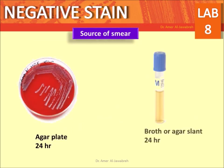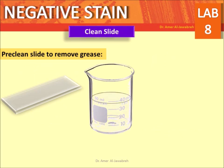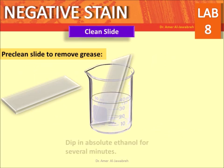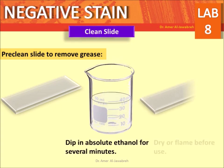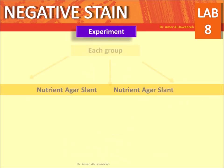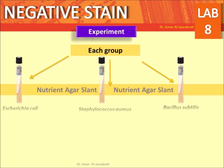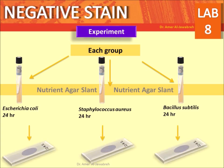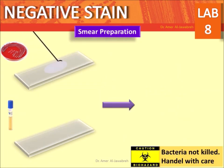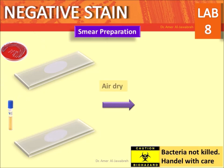Source of smear: agar plate, broth, or agar slant. Clean slide preparation: pre-clean the slide to remove grease, dip in absolute ethanol for several minutes, then dry or flame before use. Provide each group with three nutrient agar slants: the first containing Escherichia coli, the second containing Staphylococcus aureus, and the third containing Bacillus subtilis. Prepare smears from each slant.